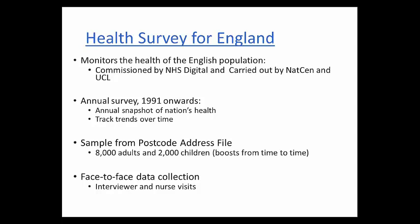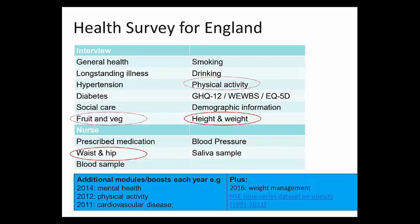Because it's a cross-sectional survey, it contains different respondents each year, so unlike longitudinal cohort studies you can't track an individual's health over time. But it gives you an annual snapshot of the nation's health. Every year the survey includes core questions and measurements: height and weight, waist and hip, and physical activity and fruit and vegetable consumption. Each year there's also either an additional module, boost, or special focus on particular topics such as cardiovascular disease or physical activity.